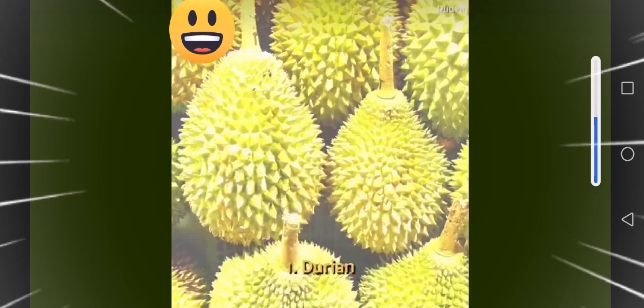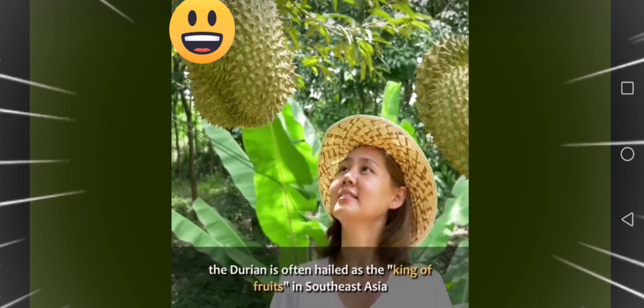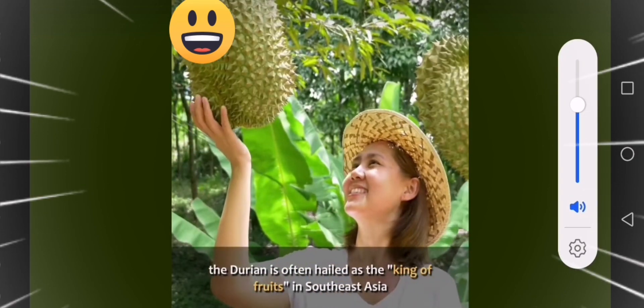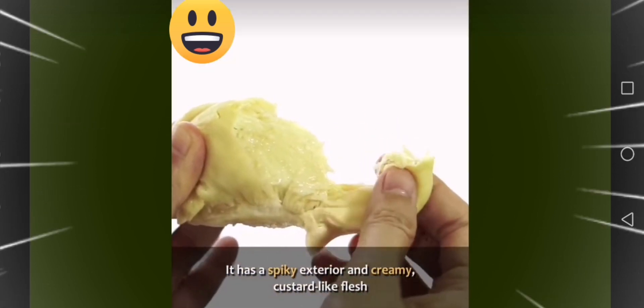One, durian. Due to its distinctive odor and unique flavor, the durian is often hailed as the king of fruits in Southeast Asia. It has a spiky exterior and creamy custard-like flesh.